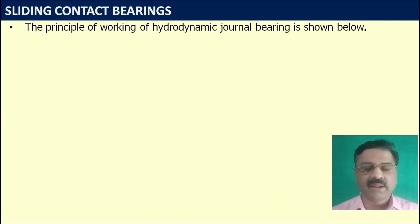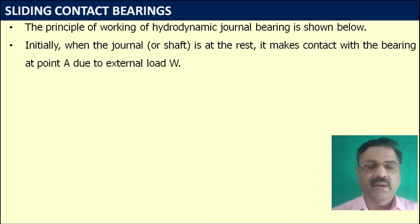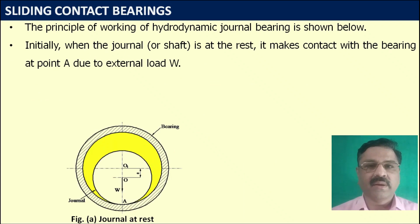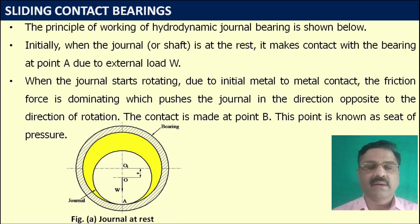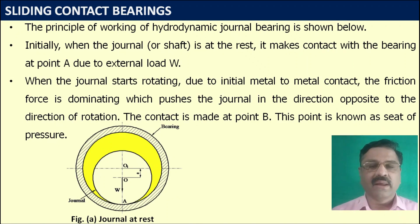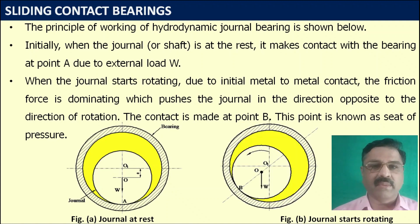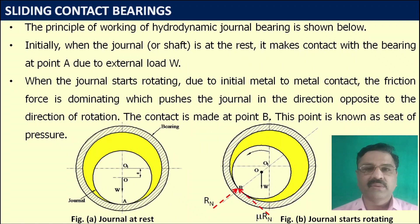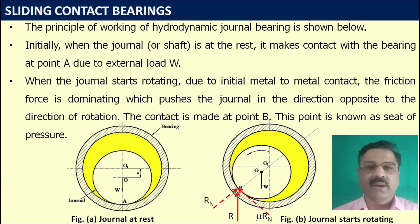Now let us see the principle of hydrodynamic bearings. Initially, when the shaft is at rest, since there is no motion, there is direct metal-to-metal contact as the separating film has not developed, and therefore the shaft touches the bearing as shown in the figure at point A. As the journal starts rotating, there is initially metal-to-metal contact. The frictional force is dominating and therefore it pushes the shaft in the opposite direction to the direction of motion, as shown in the figure at point B. This point is known as the seat of pressure.